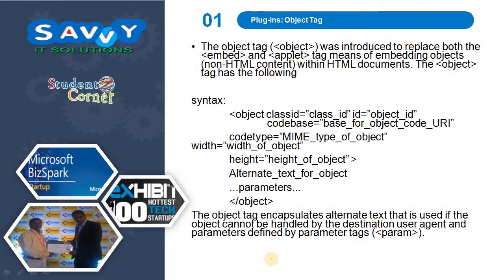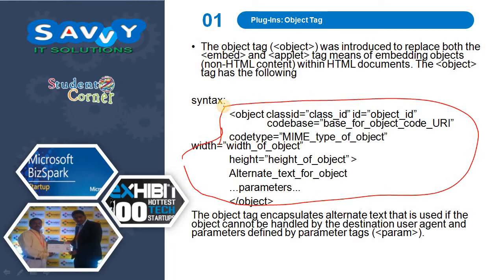The plugins object tag has a syntax for creating an object. We can directly import a YouTube video into our web page with the help of the object tag. The object tag was introduced to replace both the embed and applet tags as means of embedding non-HTML content within HTML documents. The object tag encapsulates alternate text used if the object cannot be handled by the destination user agent, and parameters defined by parameter tags.